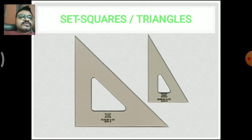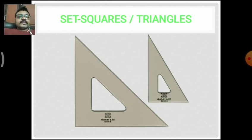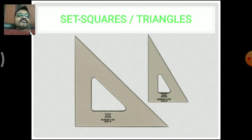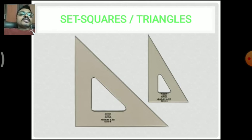Next are the set squares, also called triangles. Two basic types of set squares are used. The first type has angles of 45°, 45°, and 90° — one angle of the set square is 90 degrees, and the other two are 45 degrees each, totaling 180 degrees. The second type has angles of 30°, 60°, and 90°. Both types of set squares are used for drawing lines and for angle purposes, with different types of angles drawn using a T-square and set squares together.